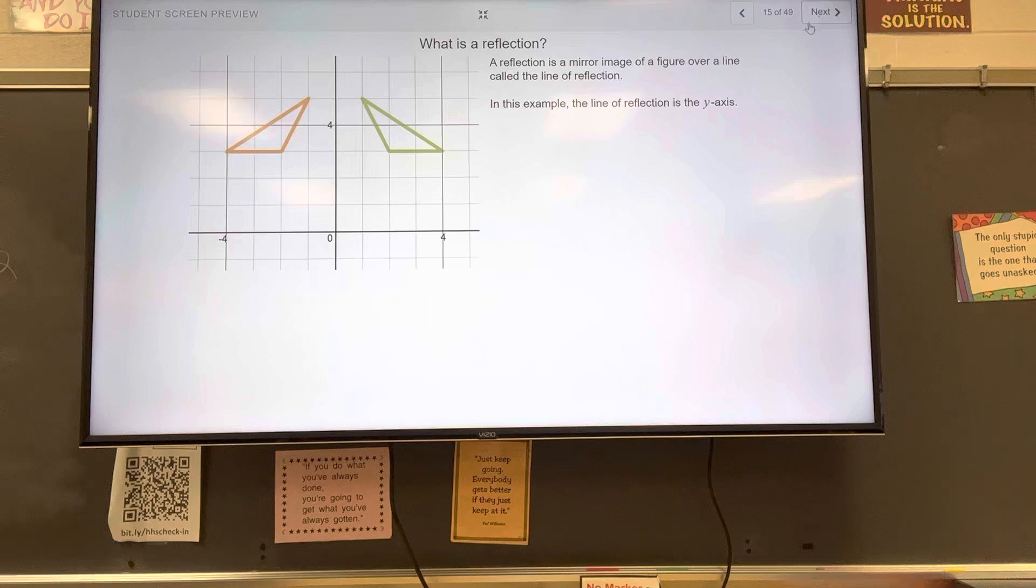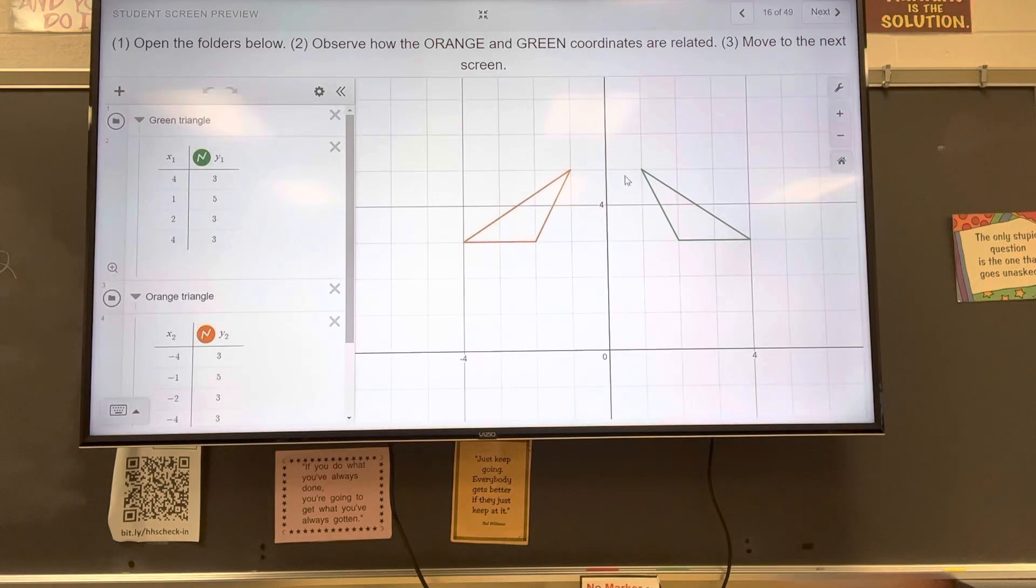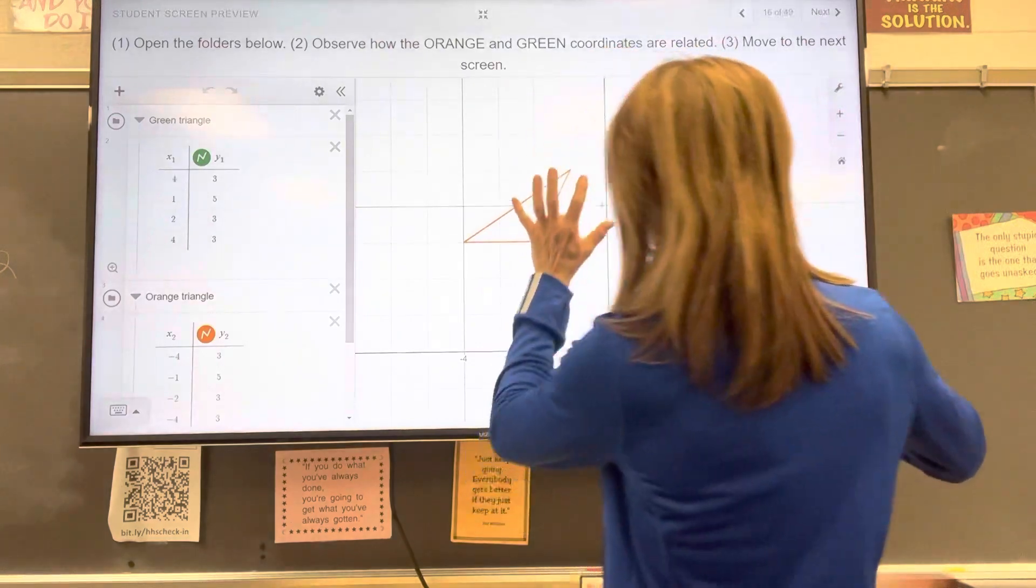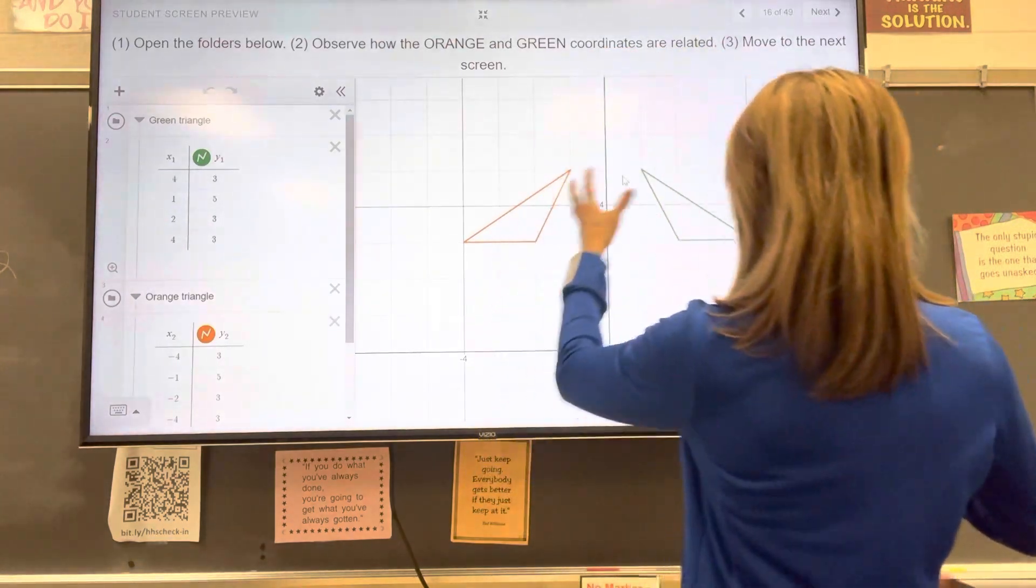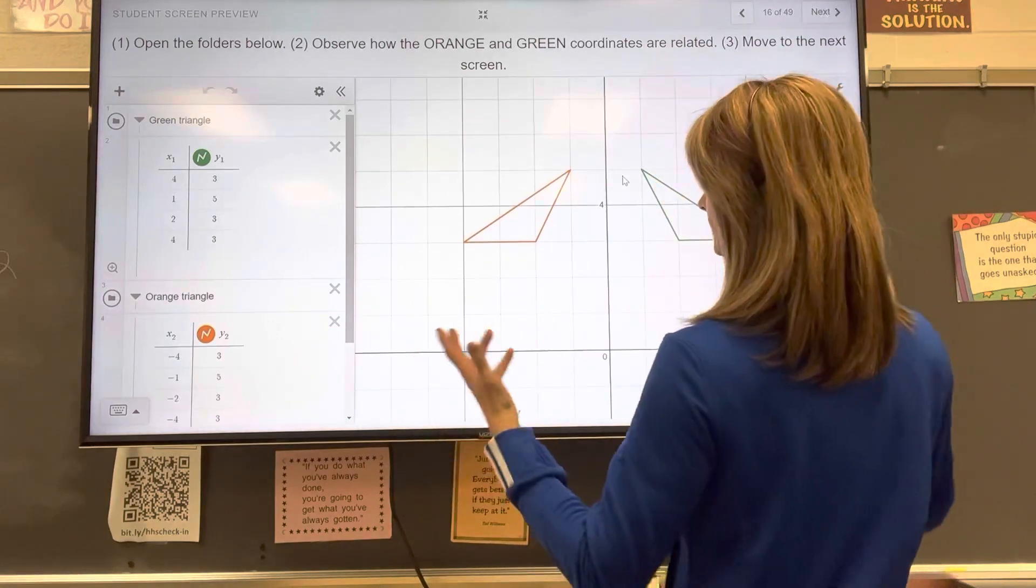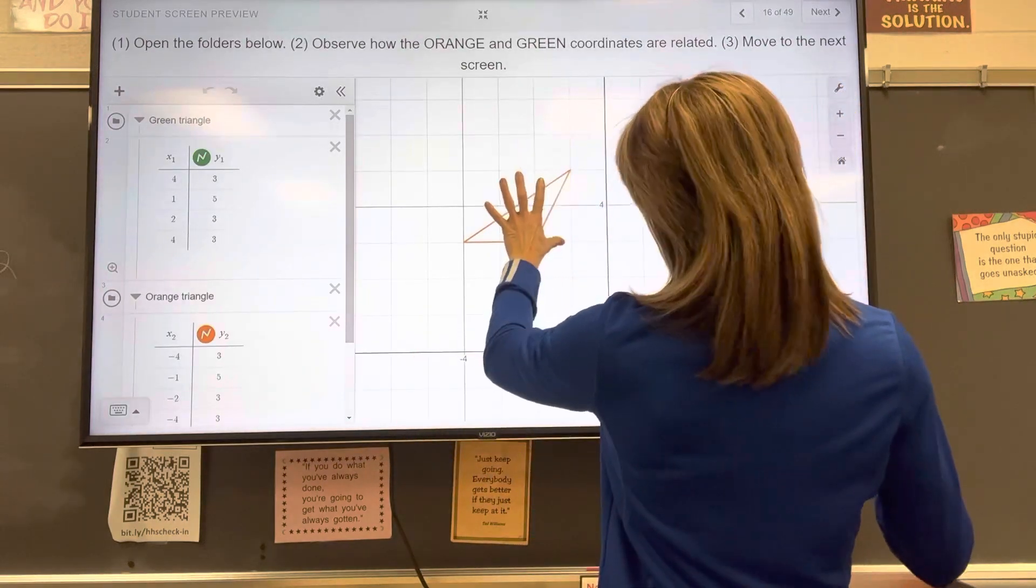Slide 16. So here we have same images. The first image, when we reflect it to a new location, the first image, and I don't know which here, doesn't say really. Let's say the first image was the orange one.